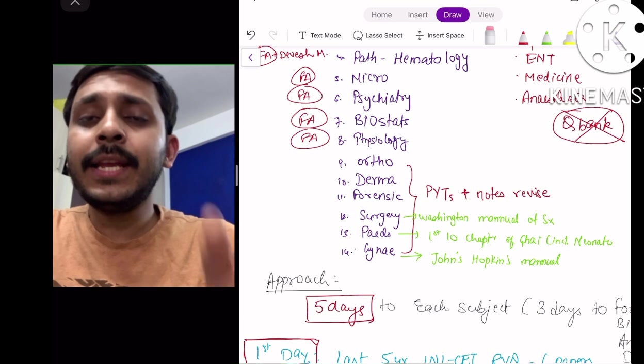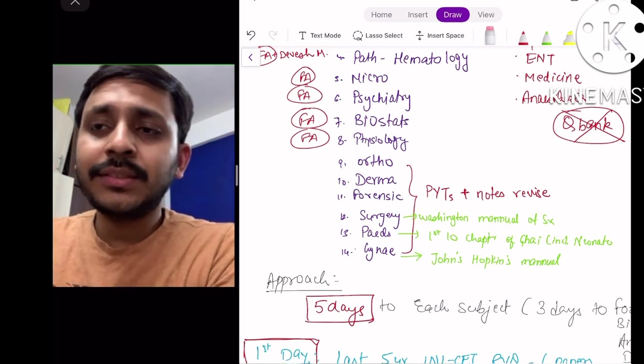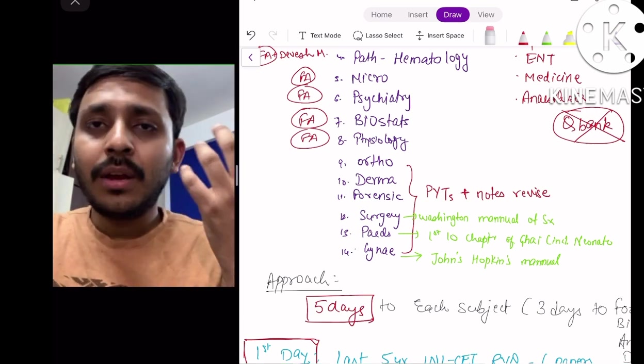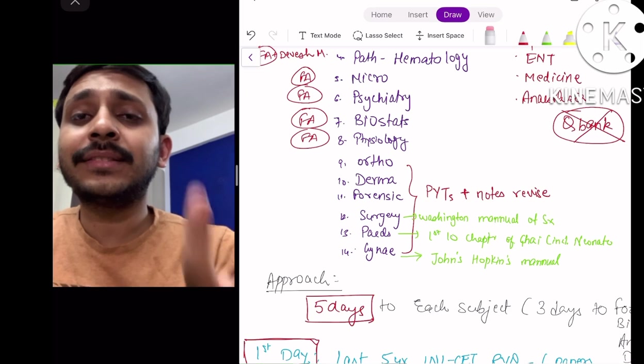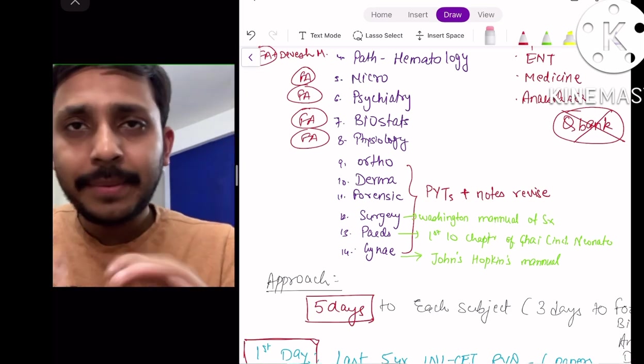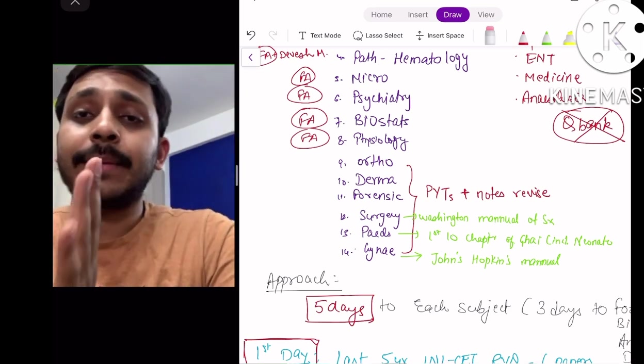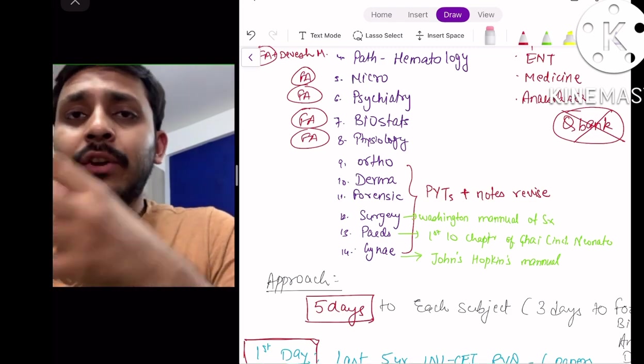Similarly, for Obstetrics-Gynecology, gynae forms the major bulk of INI-CET questions and Johns Hopkins Manual is a very good book for you to reference to have an evidence-based knowledge of the various cancers. In pediatrics, I think just reading the first 10 chapters of Ghai including Neonatology would suffice.